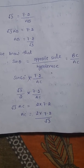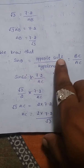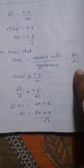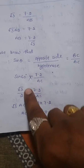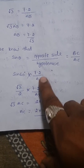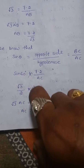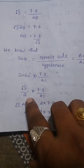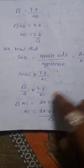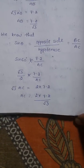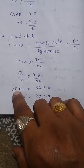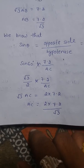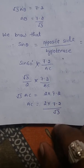Now we find the length of the ladder using sin θ. Sin θ = opposite side / hypotenuse = BC / AC. So sin 60 = 7.2 / AC. Sin 60 = √3 / 2 from the table, so we should know the table values. That gives √3 / 2 = 7.2 / AC. By cross multiplication: √3 × AC = 2 × 7.2, therefore AC = 2 × 7.2 / √3.